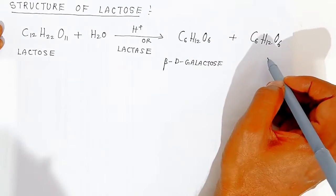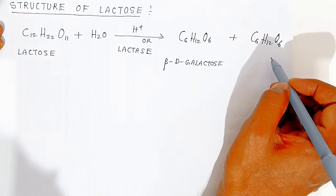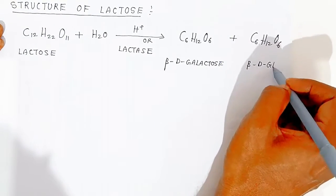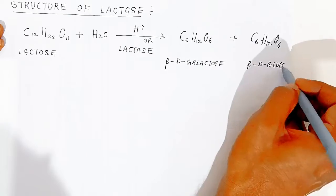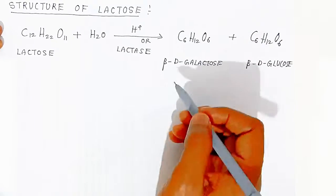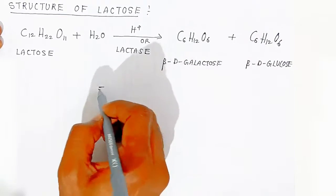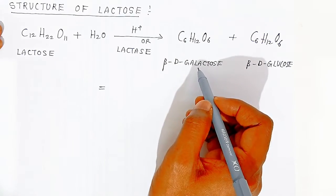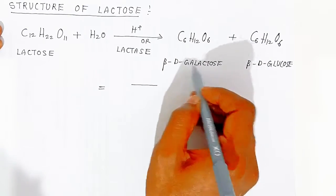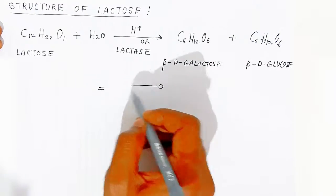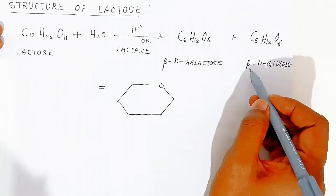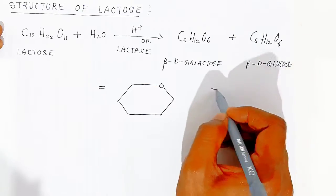The second monosaccharide from lactose hydrolysis is beta-D-glucose. So lactose is made of beta-D-galactose and beta-D-glucose. When writing the Haworth projection formula, beta-D-galactose is drawn with the pyranose ring.